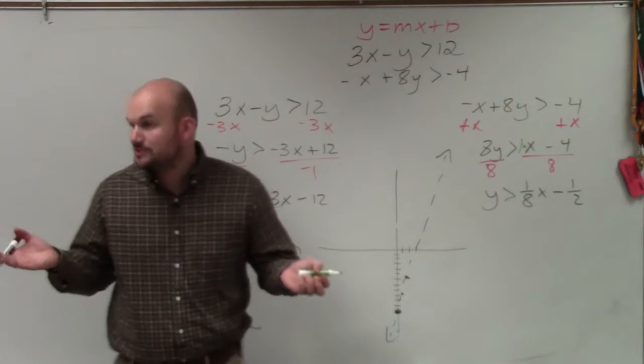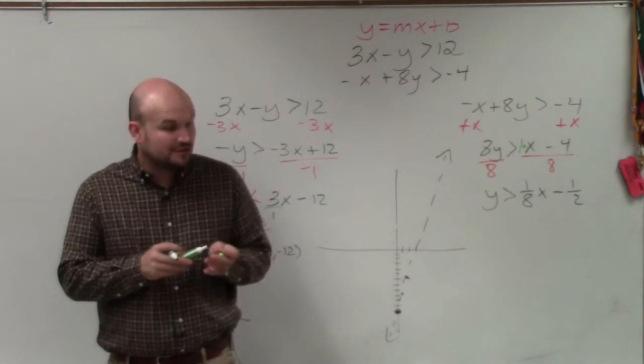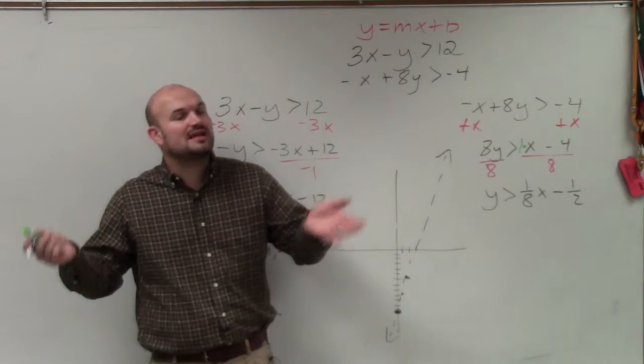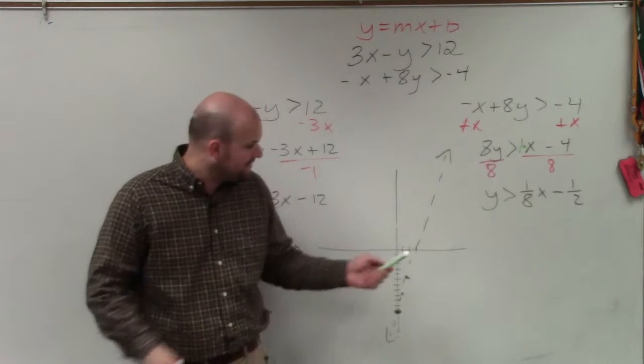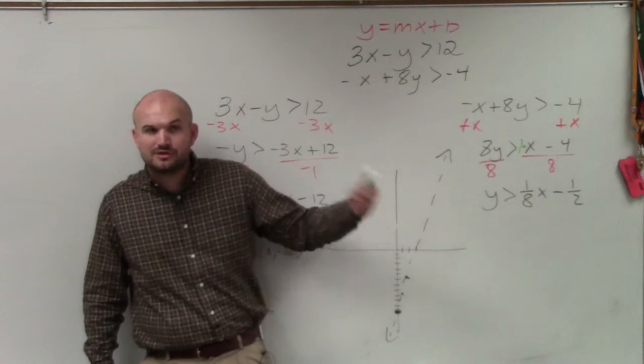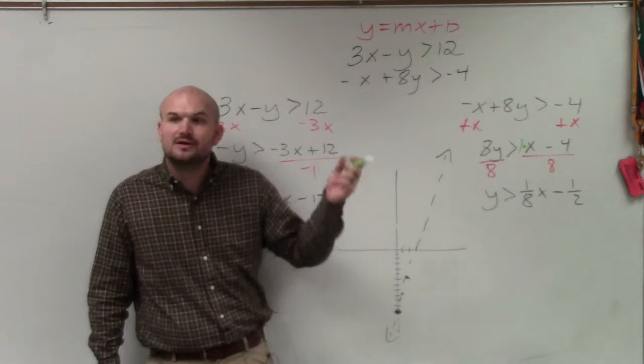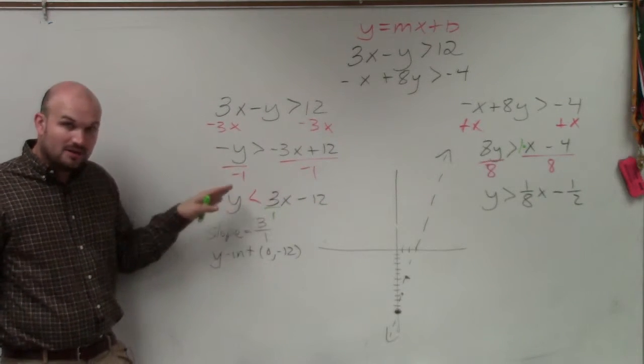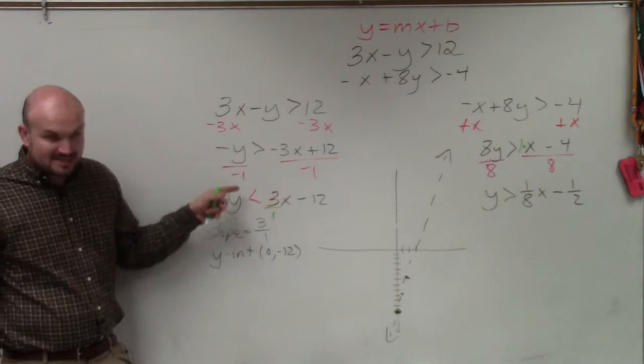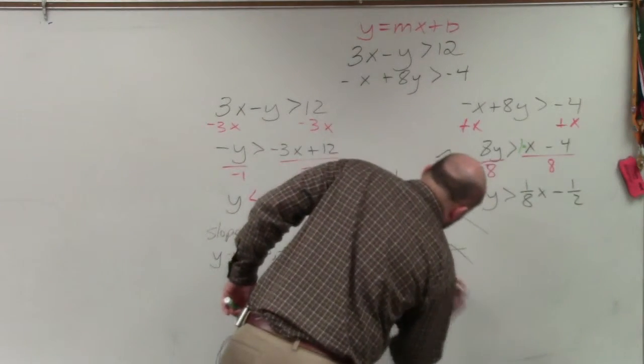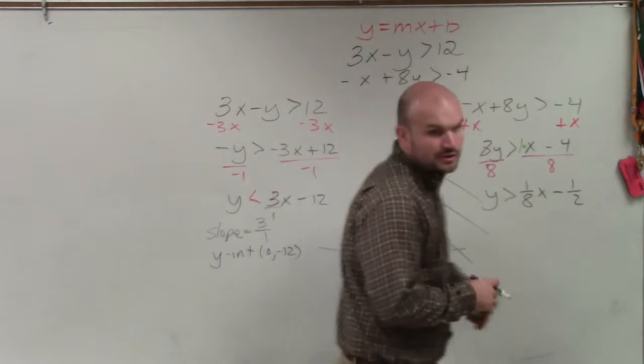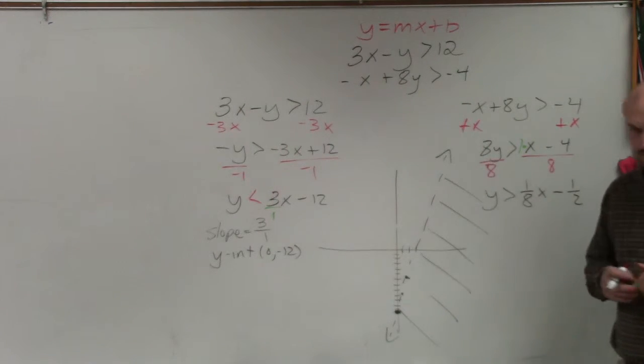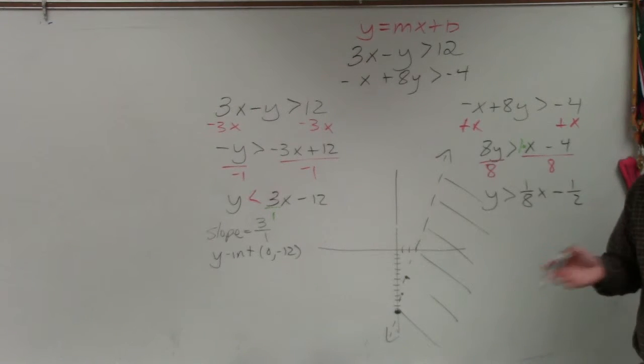So it looks like that. Now, you guys could use test points, right? And to determine shading, you can use the test point. And the best test point to pick always is 0, 0, as long as the line does not go through 0, 0. Well, this line does not go through 0, 0. So you could easily test your solution. However, we're in algebra 2 now. So hopefully, you guys understand, as long as you have your equation solved for y, where y is on the left-hand side, since it's less than, that's going to tell me to shade below.